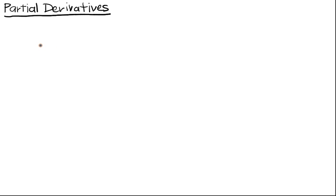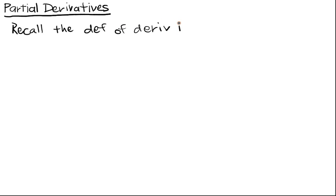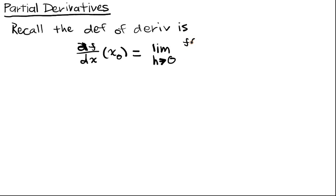In multivariable calculus, we have many notions of a derivative, but they all start off with the notion of the partial derivatives. Recall in univariate calculus, we have the definition of a derivative: df/dx at x₀ is equal to the limit as h approaches 0 of f(x₀ + h) minus f(x₀), all over h. And we want to generalize this idea to multiple dimensions.